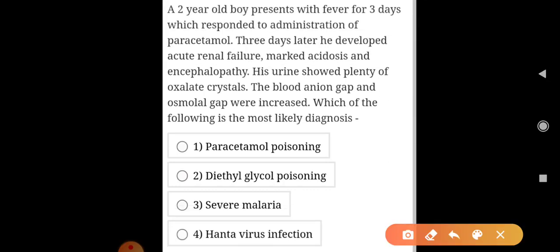A 2-year-old boy presents with fever of three days that responded to administration of paracetamol. Three days later he developed acute renal failure, marked acidosis and encephalopathy. His urine showed plenty of oxalate crystals. The blood anion gap and osmolal gap were increased. Which of the following is the most likely diagnosis?